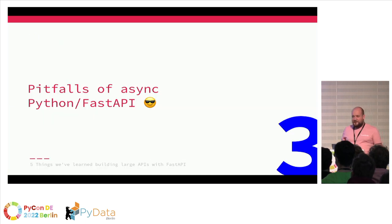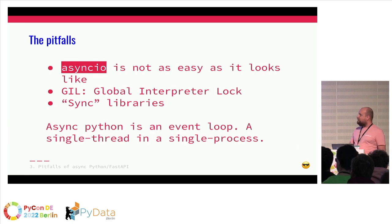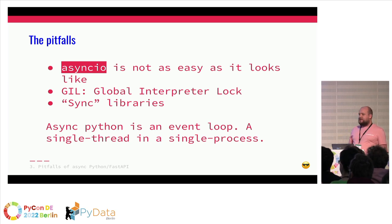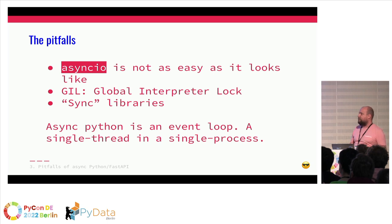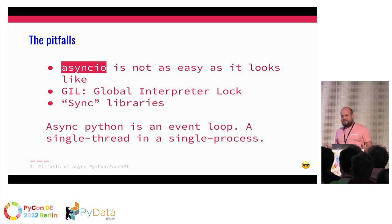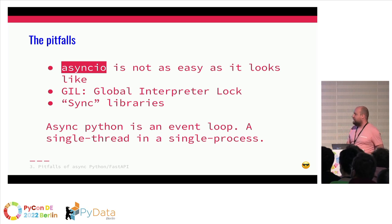This is my favourite part — and also the hardest part — some pitfalls of asynchronous Python. This could actually be a talk on its own. It's not really a problem of FastAPI; it's just how asynchronous Python works. Asynchronous Python is not as easy as it looks. If you've ever worked with Node, I think Node is easier to use asynchronously than Python, because Python wasn't asynchronous before — they added it later on. That results in a lot of libraries not being asynchronous, and that is a problem.